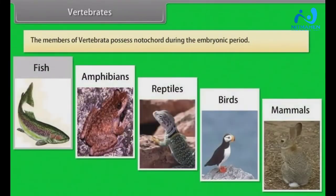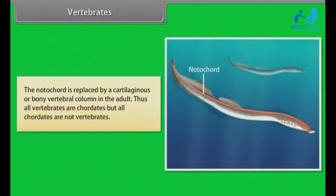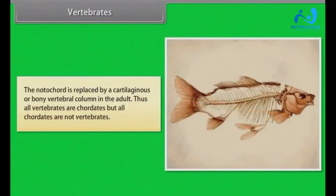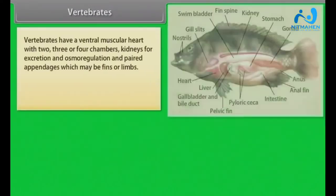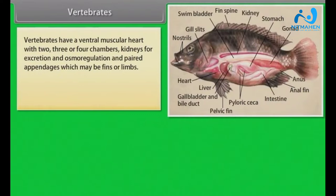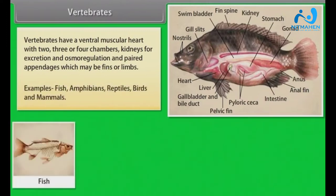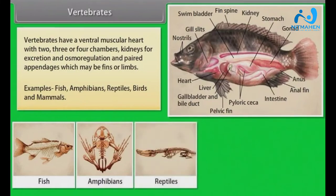The members of Vertebrata possess notochord during the embryonic period. The notochord is replaced by a cartilaginous or bony vertebral column in the adult. Thus all vertebrates are chordates, but all chordates are not vertebrates. Vertebrates have a ventral muscular heart with two, three or four chambers, kidneys for excretion and osmoregulation, and paired appendages which may be fins or limbs. Examples: fish, amphibians, reptiles, birds and mammals.